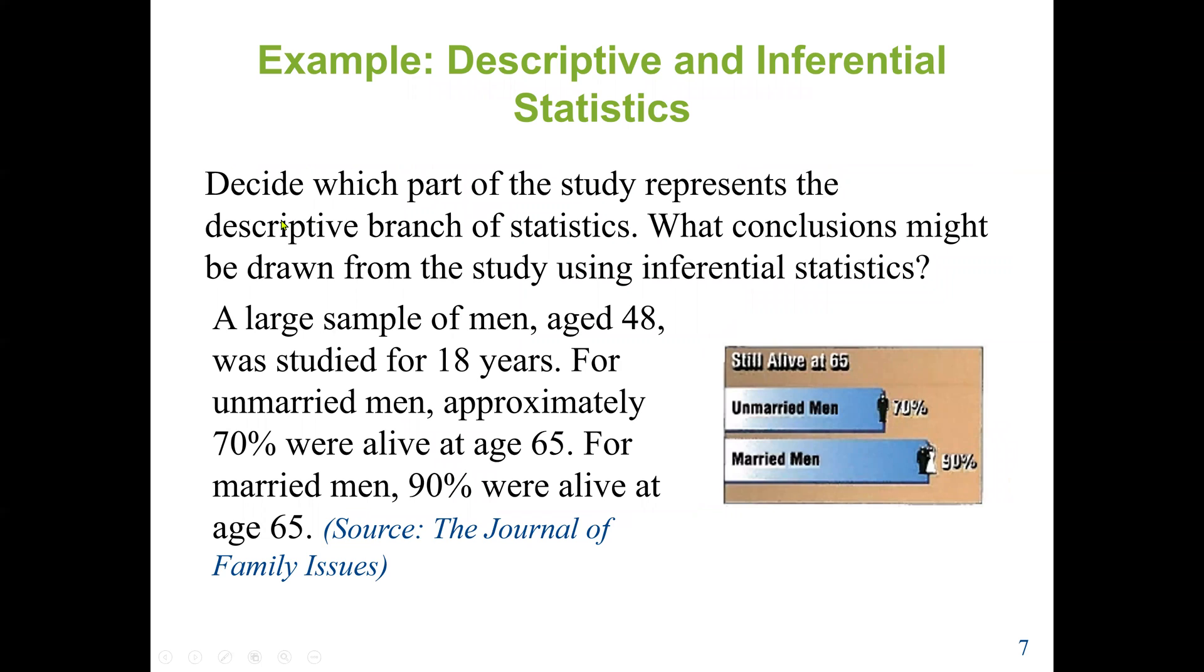Example here: decide which part of a study represents descriptive branch of statistics and what conclusion might be drawn from a study using inferential statistics. Here we see a large sample of men, age 48, was studied for 18 years. For unmarried men, approximately 70% were alive at the age of 65. For married men, 90% were alive at the age of 65. The question is, which part of the study represents descriptive branch of statistics and what conclusion might be drawn from the study using inferential statistics.